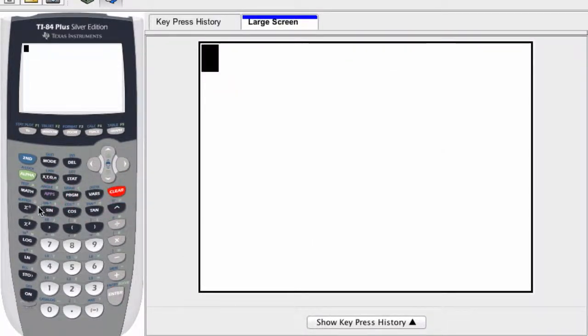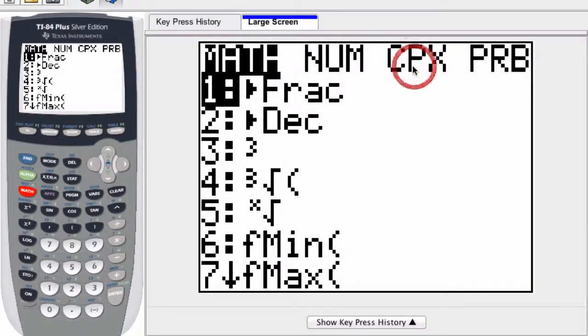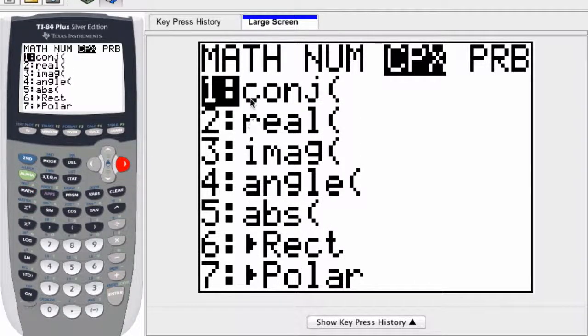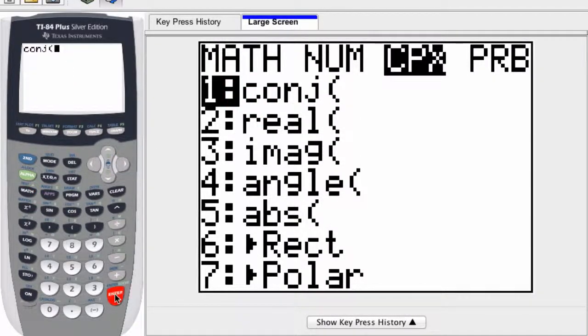I press enter, and if I want to find the conjugate of a number, I hit math. The third column here, cpx, is the complex commands menu, and the first item there is the conjugate. So I select that,